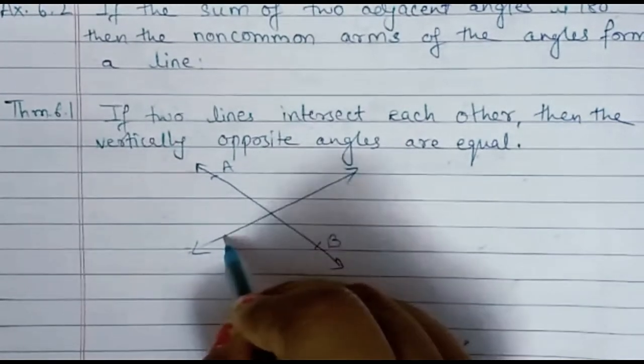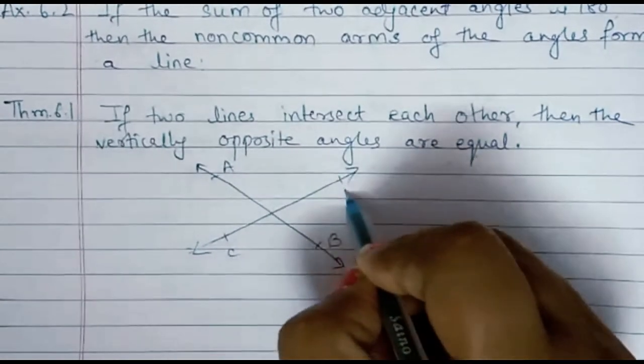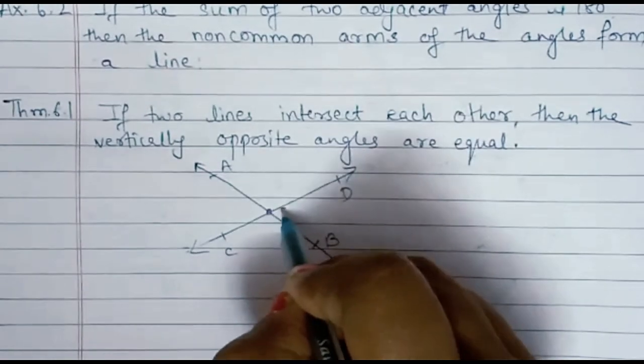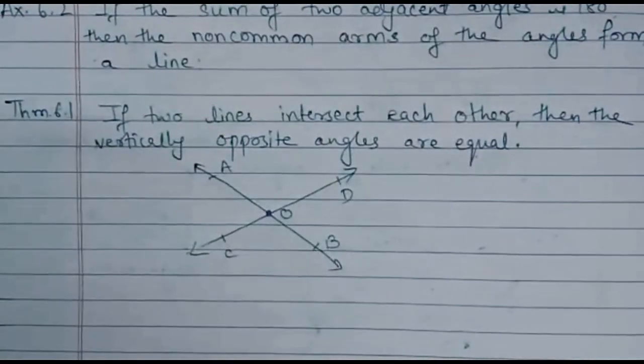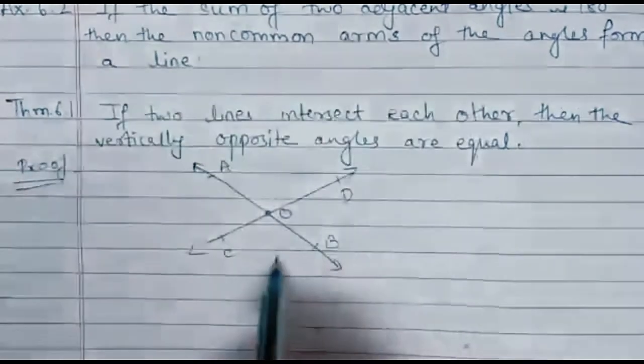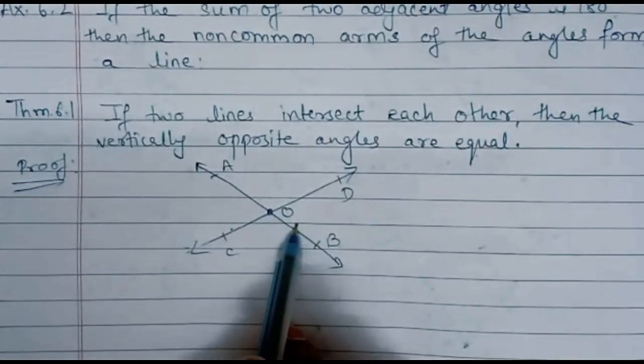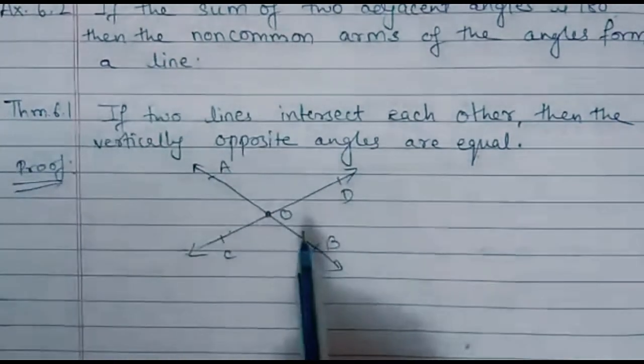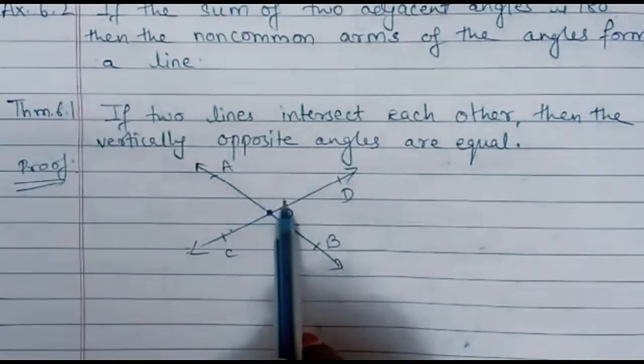This is line AB and this is line CD intersecting each other at point O. So according to this statement we shall start with the proof. When these two lines are intersecting we will get two pairs of vertically opposite angles. One is angle AOD and angle BOC.